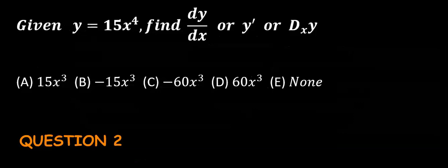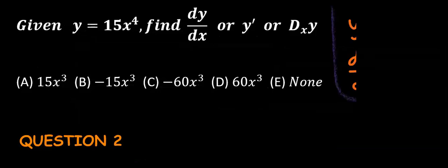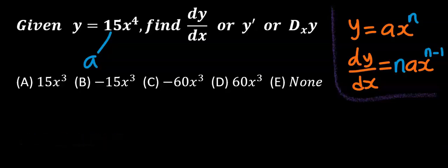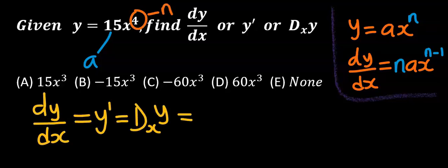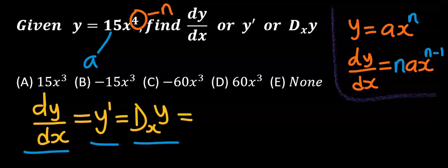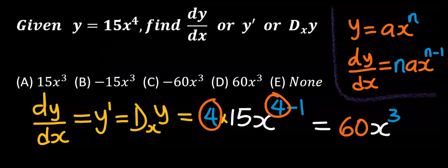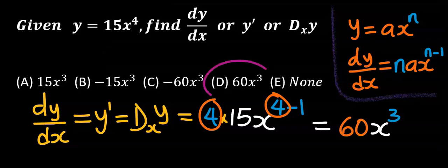Next, let's consider this question. Here our a is 15 and our n is 4. Then our dy/dx — which is the same thing as y prime — only the 4 comes down and the power becomes 4 minus 1. Our answer is 60x to the power of 3, which is option D.